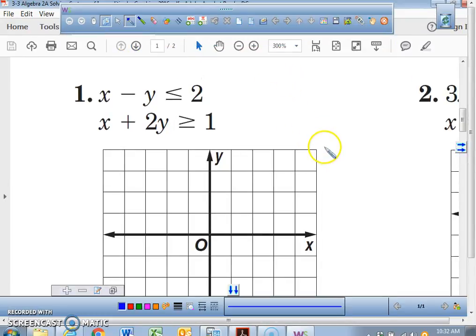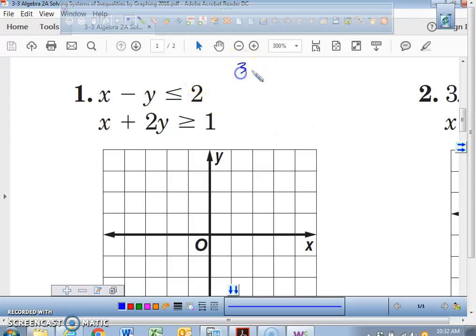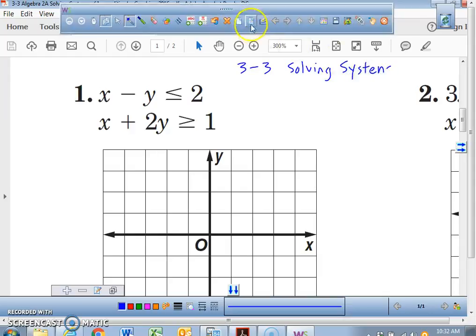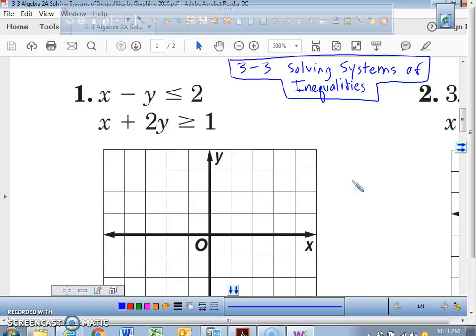Right now it looks like students are getting rulers because they know they're going to be drawing lines. Rulers are very good for drawing lines. So right now we're covering 3-3, solving systems of inequalities.